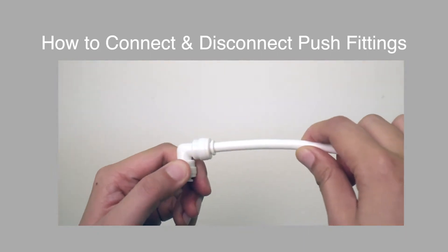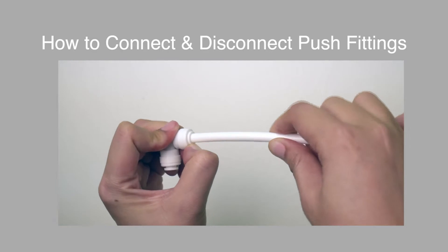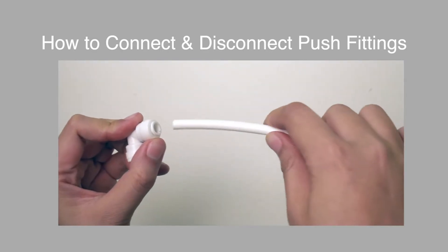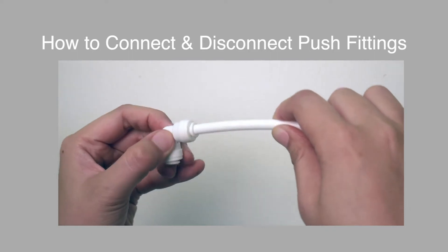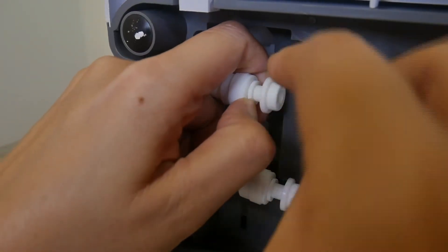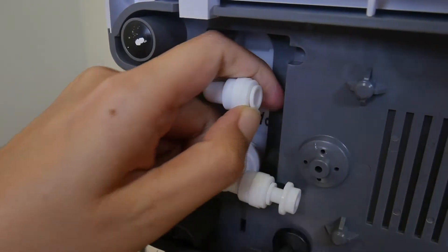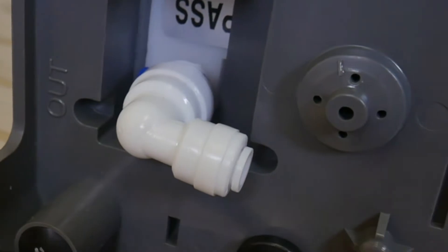While pressing the white collar of the fitting, pull the hose to disconnect. When connecting, push the hose all the way in and make sure it does not fall out. While pressing the white collar of the fitting, pull out the end cap. You may do this for both in and out.